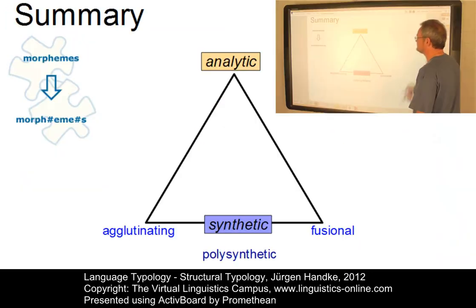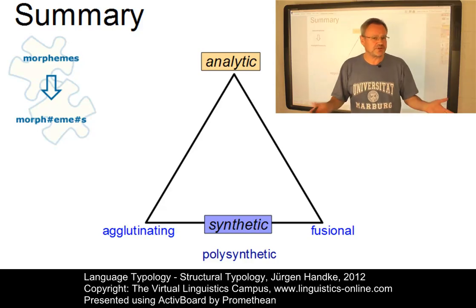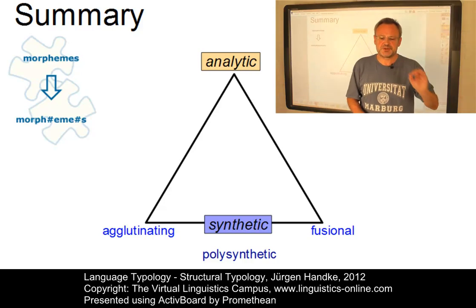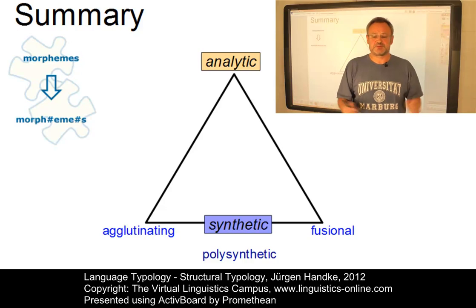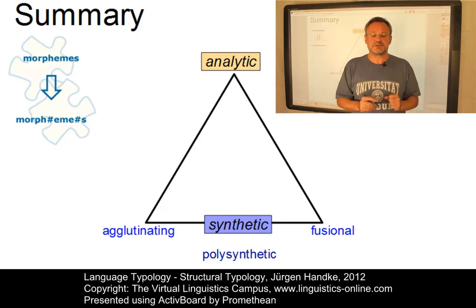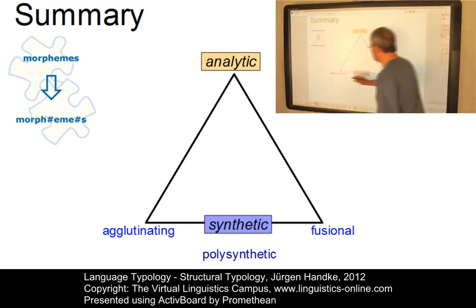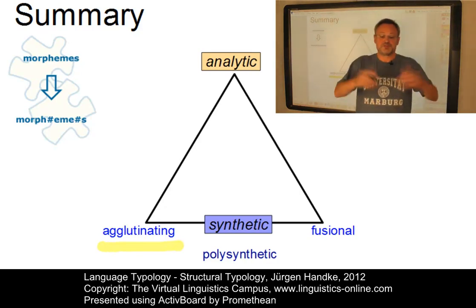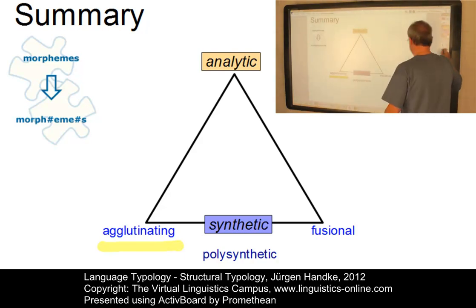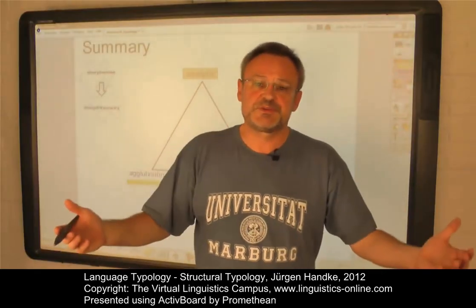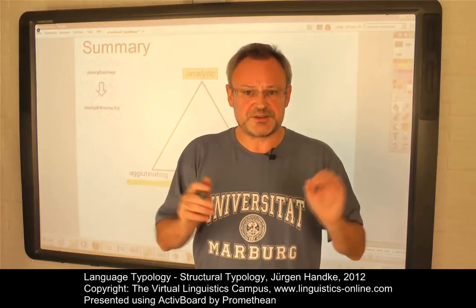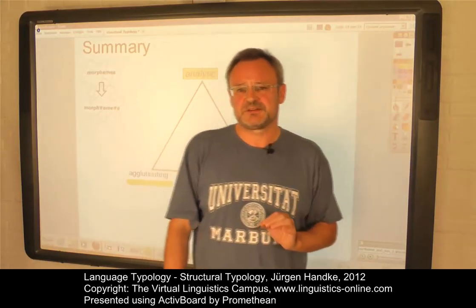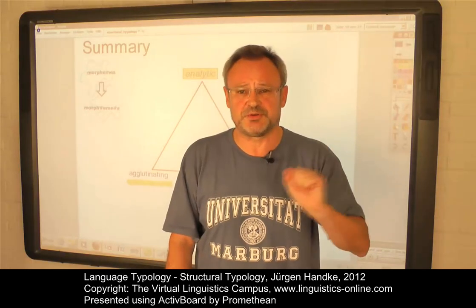In summary, the morphological or structural parameter of language classification is straightforward. By examining the inflectional possibilities of a language, we can classify languages as analytic versus synthetic. If a language is synthetic, we can further examine the type of synthesis: if the morphemes are functionally unambiguous, the language is synthetic agglutinating; if not, it is synthetic fusional. In specific cases where whole sentences are expressed via inflectional morphemes, we have the polysynthetic type. We should never forget that in all cases, the structural parameter is not binary but continuous.